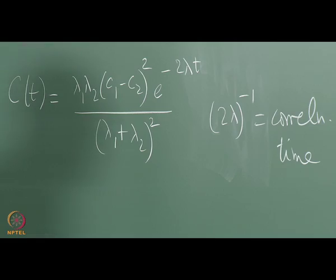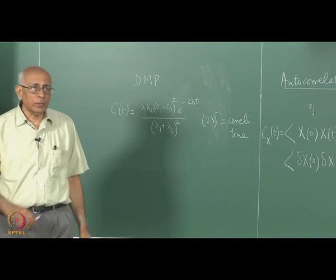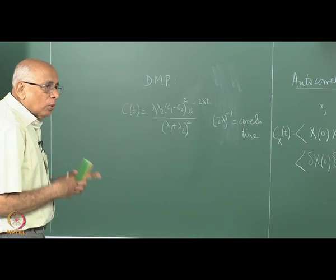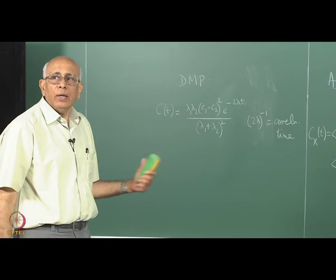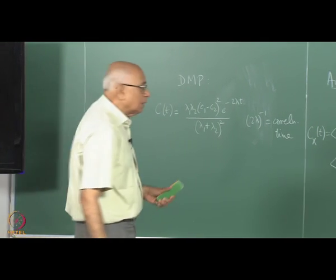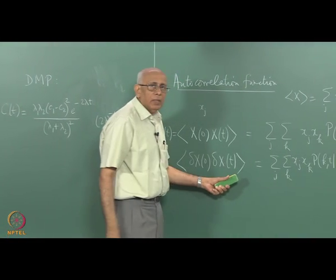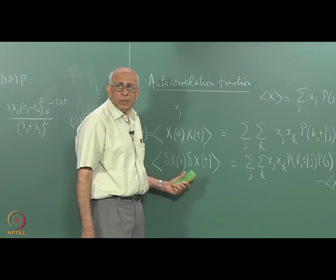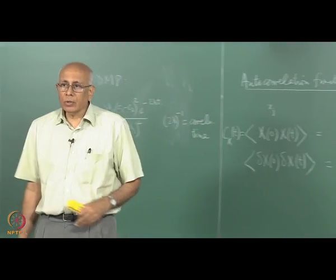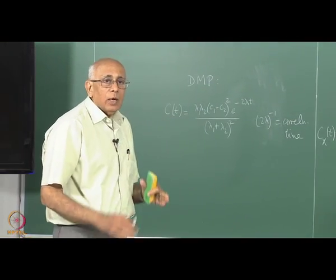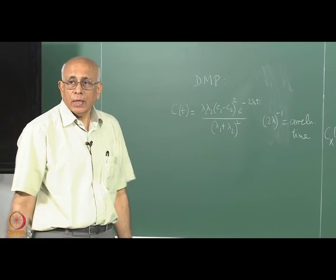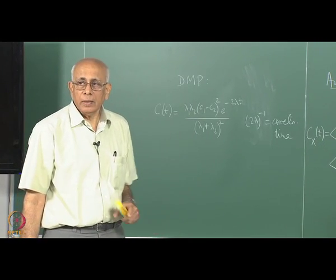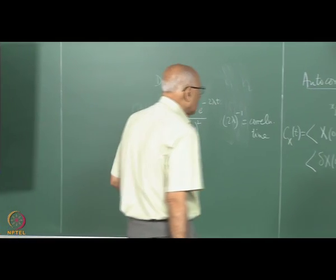This is what identifies the correlation time for this process. Once things get more complicated, evaluating the autocorrelation becomes less trivial. Eventually we will talk not about this quantity itself but its Fourier transform — decomposing it into Fourier components and asking how much amplitude is in a given frequency window — which leads to the concept of the power spectral density of a random process.